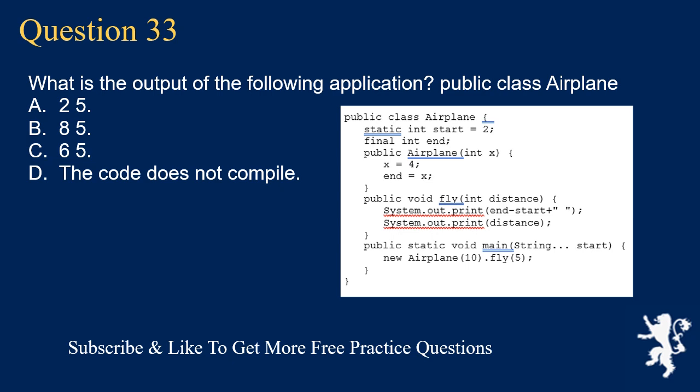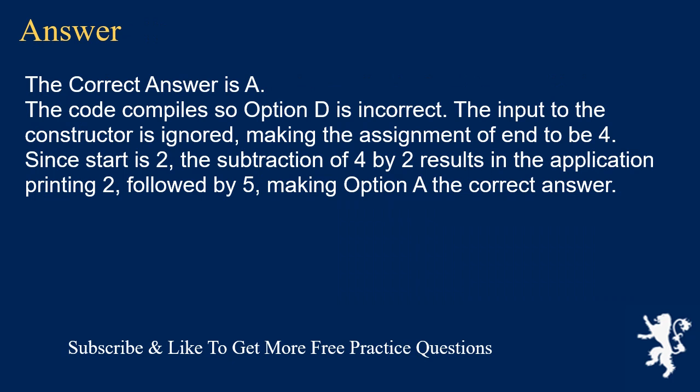Question 33: What is the output of the following application? Public class Airplane. Options: A) 2-5, B) 8-5, C) 6-5, D) the code does not compile. The correct answer is A. The code compiles so option D is incorrect. The input to the constructor is ignored, making the assignment of n equal to 4. Since start is 2, the subtraction of 4 by 2 results in the application printing 2, followed by 5, making option A the correct answer.